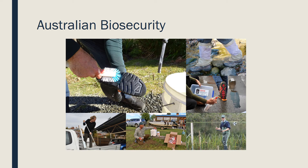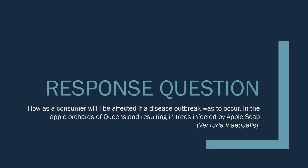Australia's biosecurity systems help protect us from introduced plant diseases. Biosecurity is about protecting Australia's environment from diseases — it includes trying to prevent new diseases arriving and helping to control outbreaks when they occur. With the constant threat of disease infection, it is essential for farms, regardless of their size, to establish on-farm biosecurity measures. These measures include keeping accurate records, purchasing and using non-contaminated fertilizer, managing water supplies, and having clear procedures for new plants and animals entering the farm. How, as a consumer, will you be affected if a disease outbreak were to occur in the apple orchards of Queensland, resulting in trees affected by apple scab?